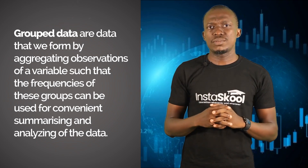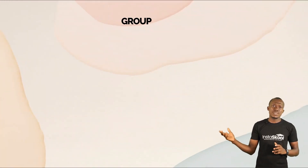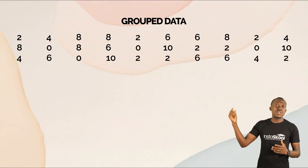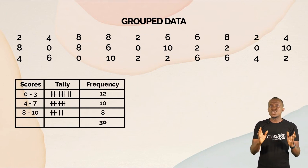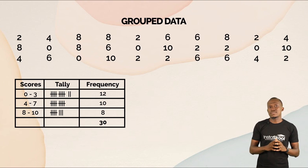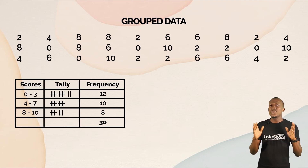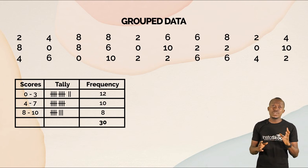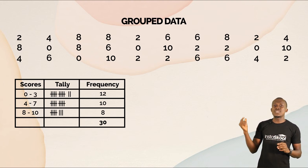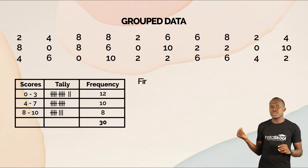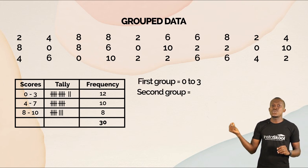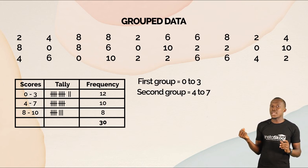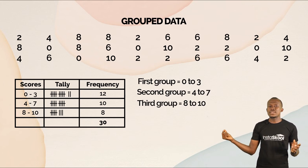Let's look at this example. In this set of data, we can choose to list all the observations and their frequencies beside them, but let's group them for better summarizing and analyzing. I have chosen to group them into three: the first group is from zero to three, the second group is from four to seven, and the last group is from eight to ten.